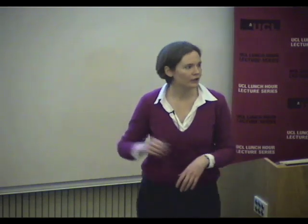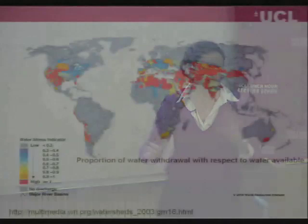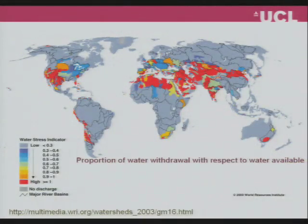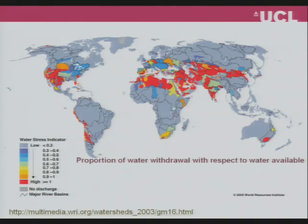We can see that on this map of water stress. This takes a very simple account of how much water is available and how much is withdrawn. We see the classic North Africa, Asia, south east Australia - the red areas where more water is being withdrawn than is replenished by rainfall. But you might also note a little red dot in the north of Europe - the south east of England. So we are in a globally recognised water scarce region, where London is abstracting more water from local rivers and groundwater than can be sustained over the long term.